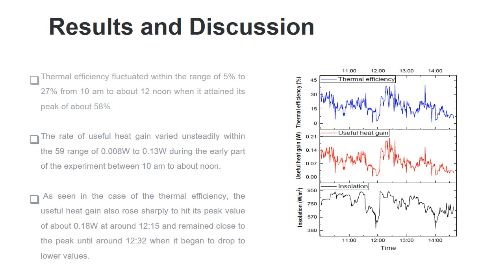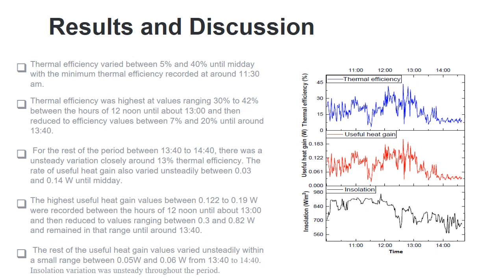As seen in the case of thermal efficiency, the useful heat gain also rose sharply to hit its peak at 0.18W at 12:15 and remained close to the peak until 12:32 when it began to drop to lower values.